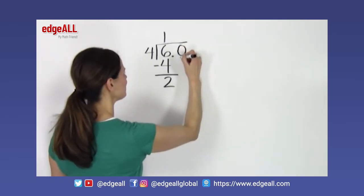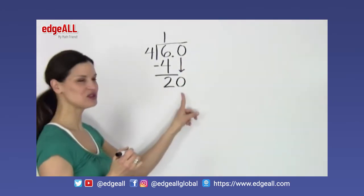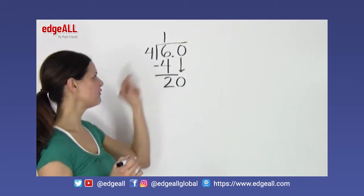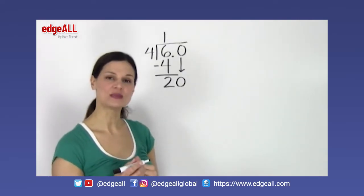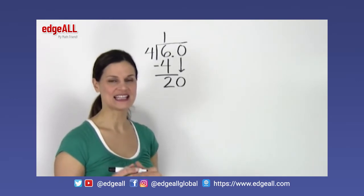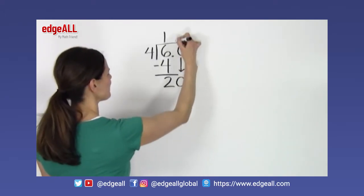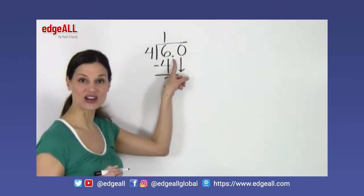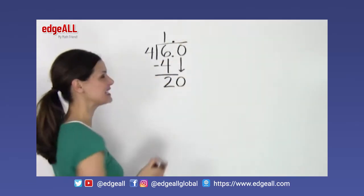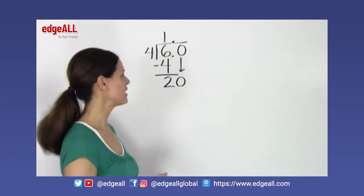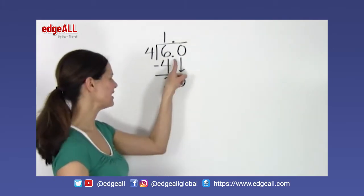Now I can bring this 0 down to join the remainder from the previous operation, so now I have 20 here — 20 divided by 4. What is the largest whole number I can multiply by 4 to get a product less than or equal to 20? When I add the decimal to my whole number 6, I need to remember to place a decimal point up in my quotient as well. That is one piece I do not want to forget — I must have a decimal point in my quotient when I have added a decimal point to my dividend.